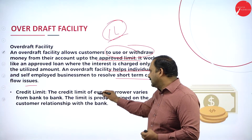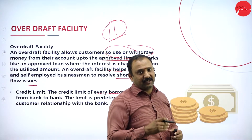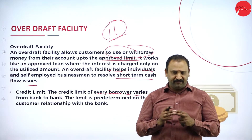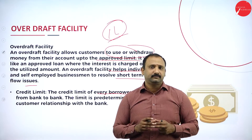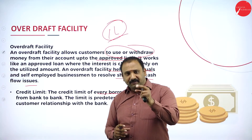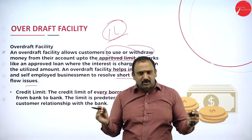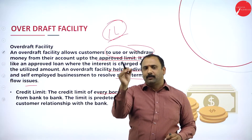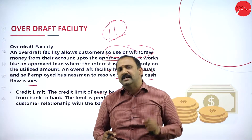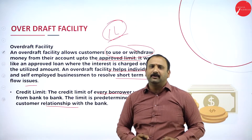The credit limit for each borrower will vary from bank to bank. For example, the overdraft facility with SBI may differ from that with ICICI Bank or HDFC Bank. Every bank decides the credit limit based on the customer, their nature of business, and their existing relationship with the bank. Based on all these factors, the credit limit is approved, and you can then borrow or utilize your overdraft facility. Customer relationship is very important in this regard.